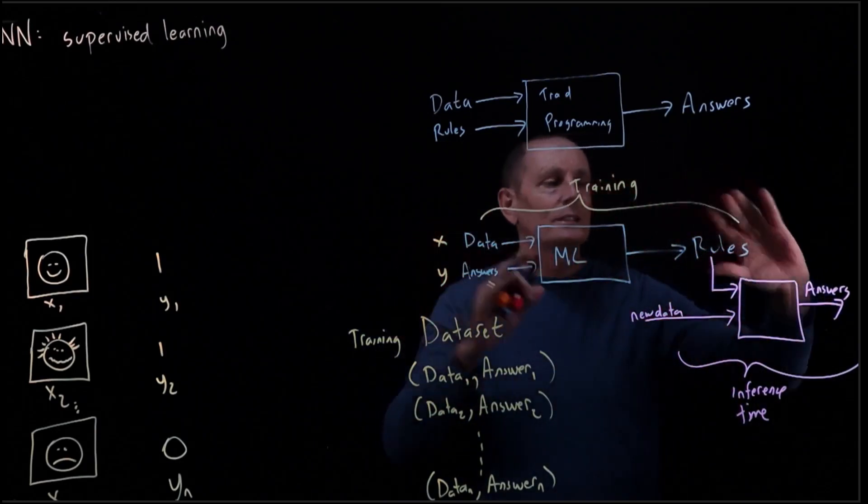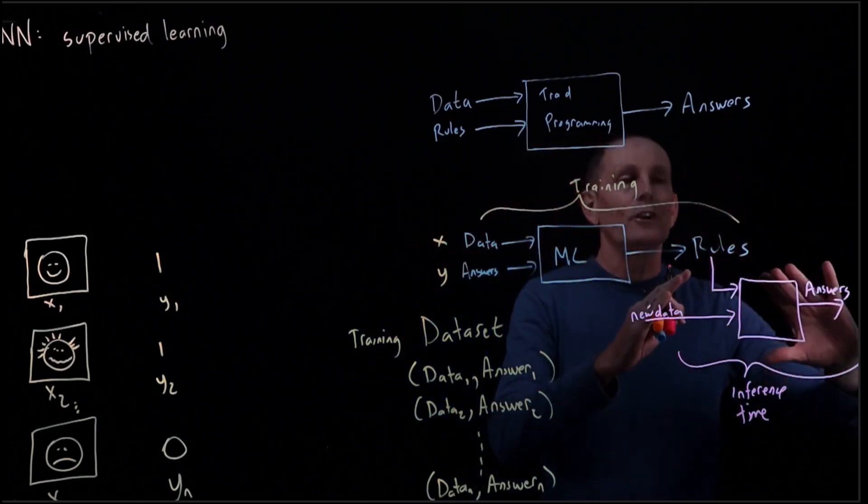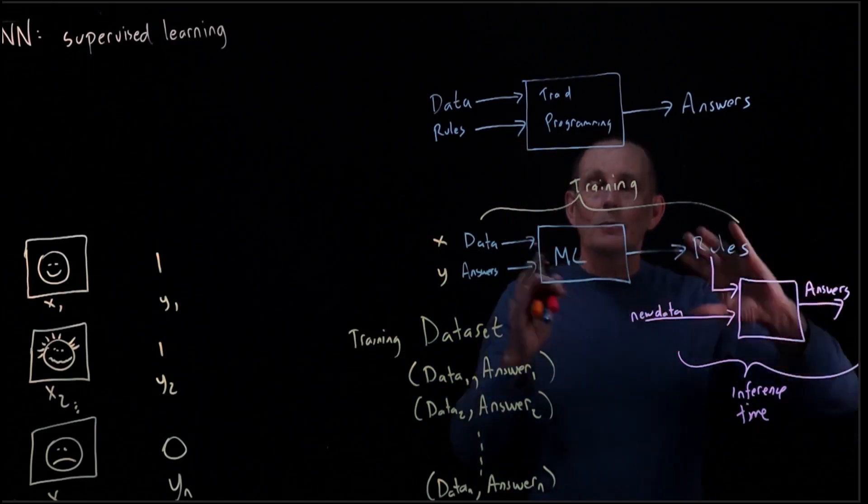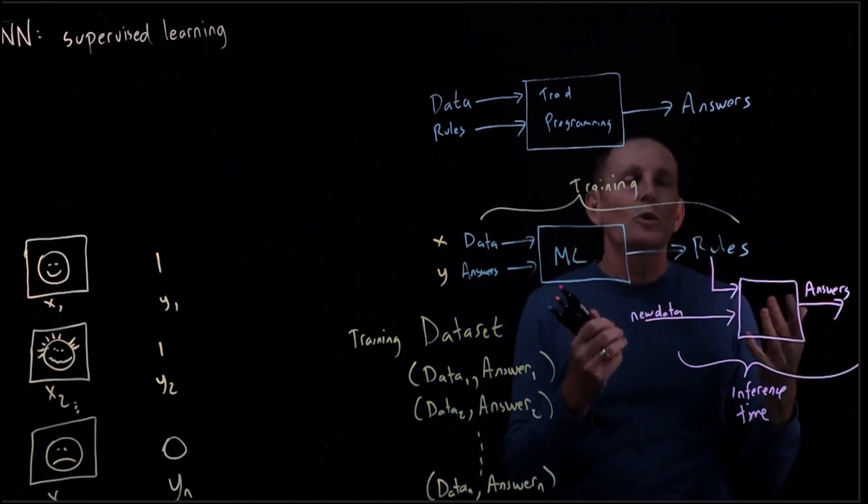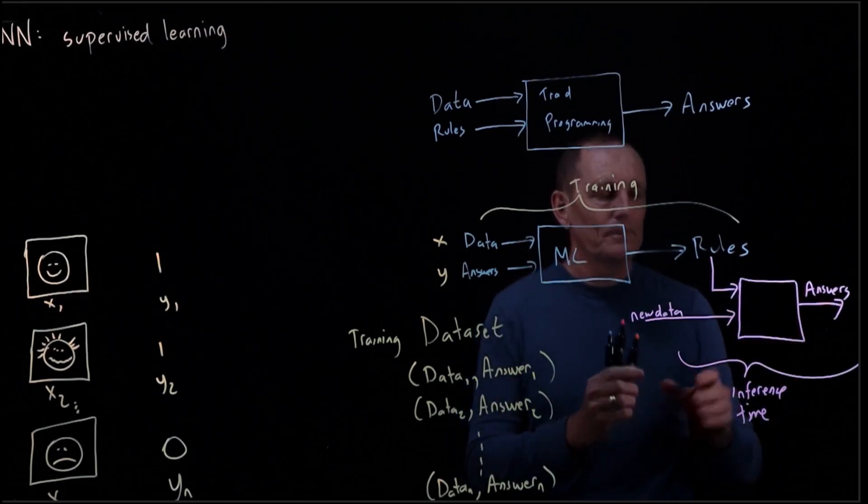This can be a quite slow process. The inference can be relatively quick. So maybe we're doing this training up in a data center, we're doing the inference just on a local phone, for example.